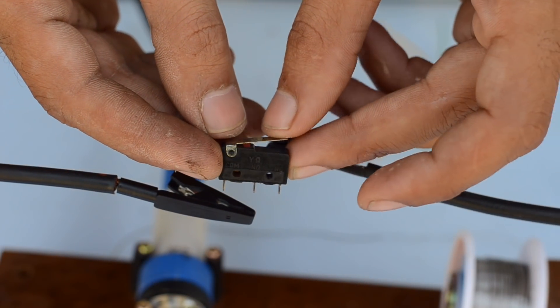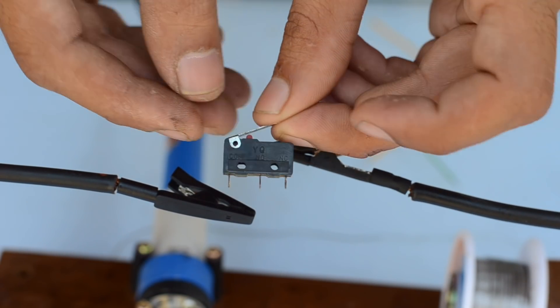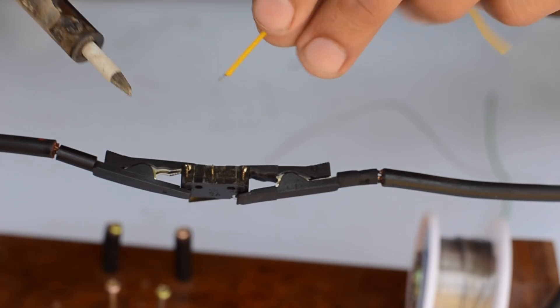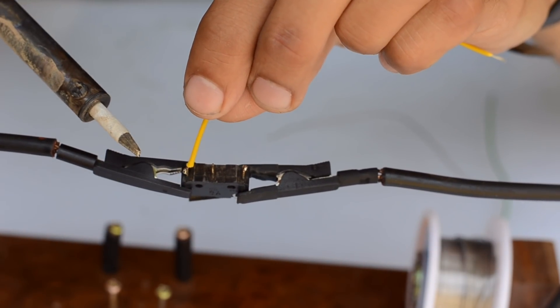Now to stop the retracting servo arm, I've used a limit switch. I've used normally closed contacts so that when the arm hits the limit switch, it switches off the servo motor.